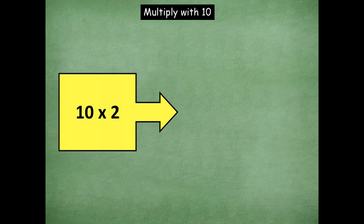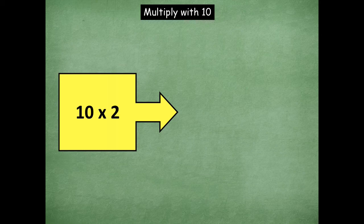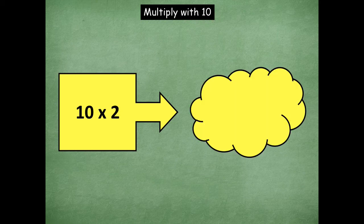Let's get started with this first one. So 10 times 2. You're going to say 10 times 2 equals and then fill in the blank. So 10 times 2. 10 times 2 equals 20. Good job.